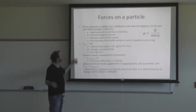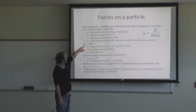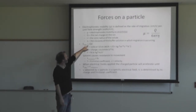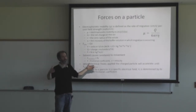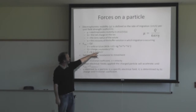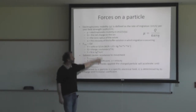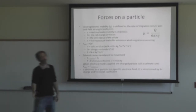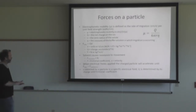The electric force on a particle is going to be equal to Q times V, where V is volts — that's basically the potential between the electrodes. Q is the charge in coulombs, and force is in newtons or kilograms times meters per second squared.